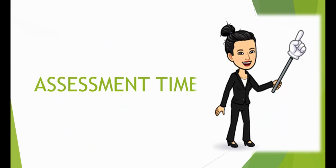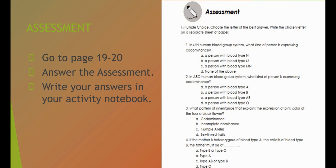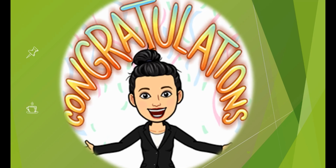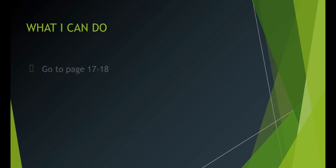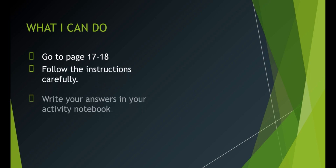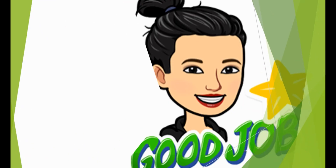It's assessment time! Go to pages 19 to 20, answer the assessment, and write your answers in your activity notebook. Good luck! Congratulations — now you know about the non-Mendelian pattern of inheritance. To make sure you can apply the lesson, do the remaining activities in this module. Go to pages 17 to 18 and answer What I Can Do — solve the following genetics-related problems applying the non-Mendelian principles of heredity. Are you ready to answer? Let's go!